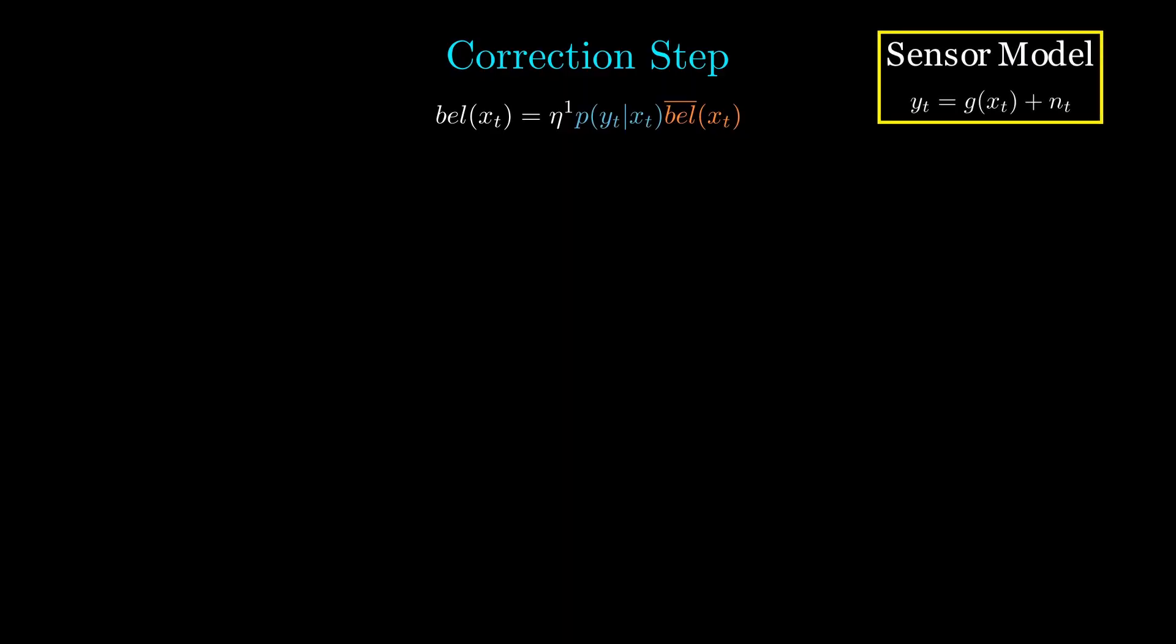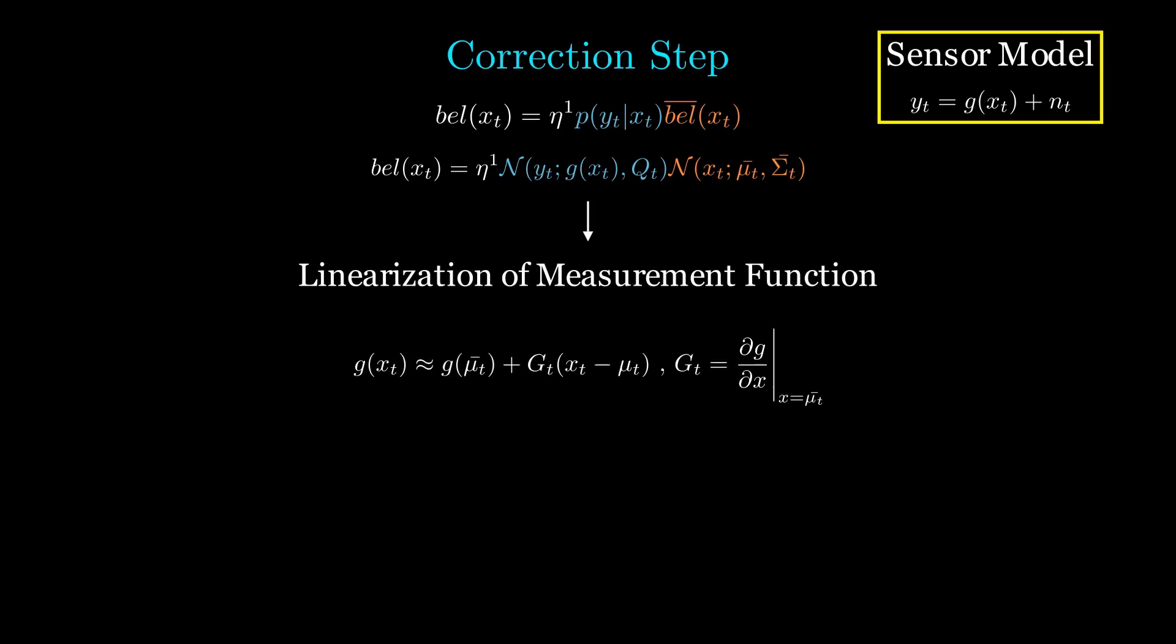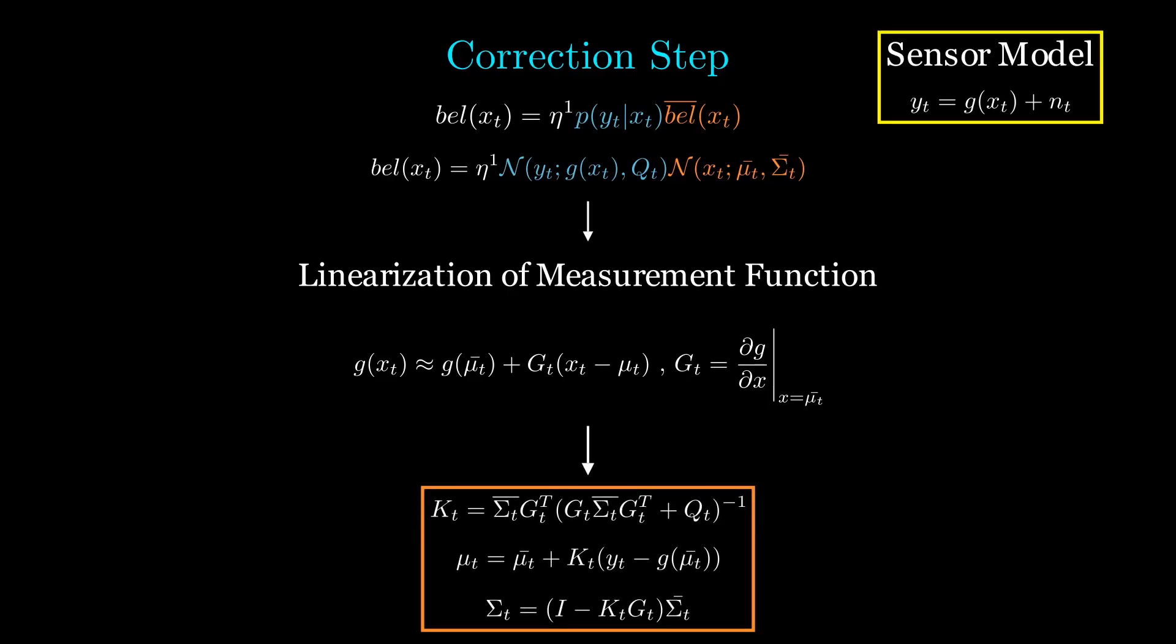Now, in the correction step, we again notice that the mean of the first term may not be linear in xt. Thus, we apply the exact same linearization procedure. This time, our point of linearization is mu t. Then we follow the exact same derivation as in the Kalman filter to arrive at these equations.